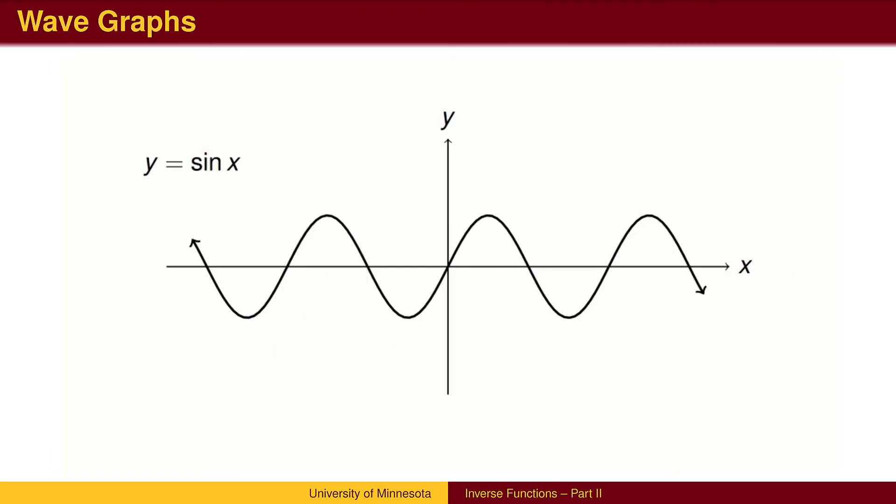Two other functions that are not one-to-one are y equals sine of x and y equals cosine of x. Here is a graph of y equals sine of x. We use the same technique, choosing a portion of the graph that is one-to-one.